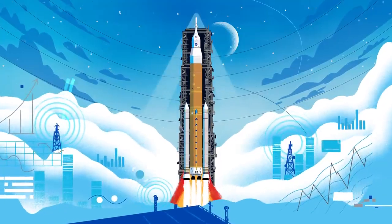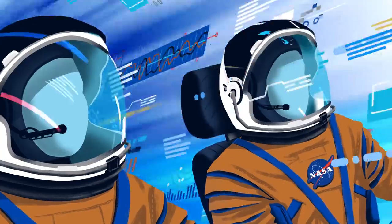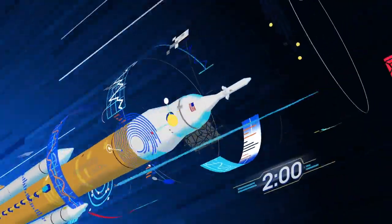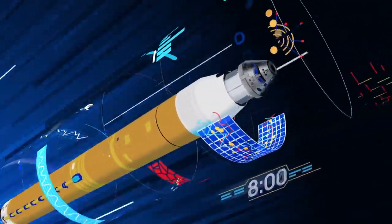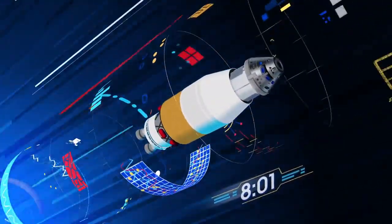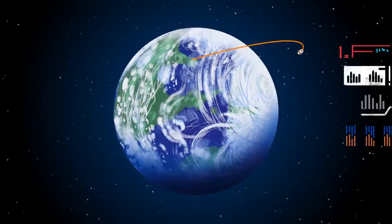All four RS-25 engines and the two solid rocket boosters come to life thundering our crew upwards. Two minutes after ignition, the solid rocket boosters are spent and released. Eight minutes after launch, the core stage is depleted and separated. The upper stage fires briefly, placing Orion into a parking orbit around the Earth.